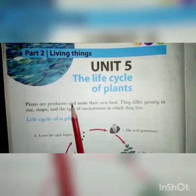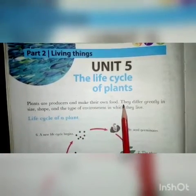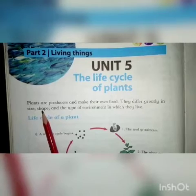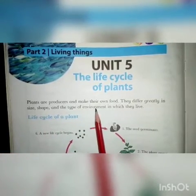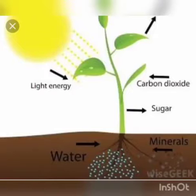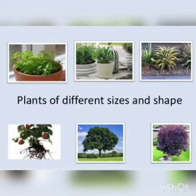Plants are producers and make their own food. They differ greatly in size, shape and the type of environment in which they live. پودے producer ہیں اور یہ اپنی خوراک خود بناتے ہیں۔ یہ اپنی جسامت، شکل اور ماحول کے لحاظ سے بہت مختلف ہوتے ہیں۔